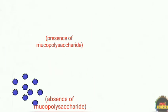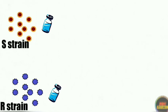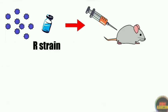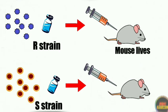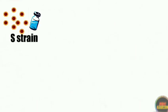What Griffith did was he isolated both S-strain and R-strain. After isolating both strains, he took the R-strain and injected it into the body of one mouse, and then took the S-strain and injected it into the body of another mouse. Since R-strain is non-causative, the mouse injected with R-strain survived. But since S-strain causes pneumonia, the mouse injected with S-strain died.